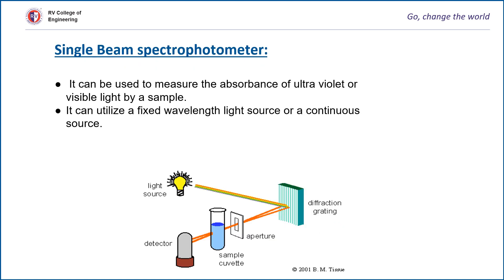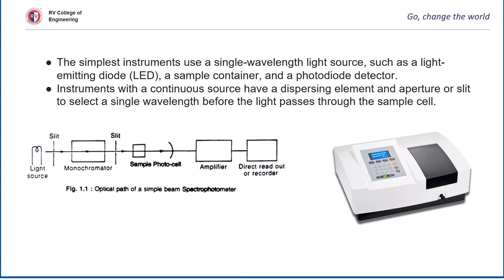There are two types of spectrophotometer: single beam and double beam. The single beam spectrophotometer can be used to measure the absorbance of ultraviolet or visible light by a sample. It can utilize a fixed wavelength light source or a continuous source. It is similar to a colorimeter. The simplest instruments use a single wavelength light source such as a light emitting diode, a sample container, and a diode detector. Instruments with a continuous source have a dispersing element and aperture or slit to select a single wavelength before the light passes through the sample cell.